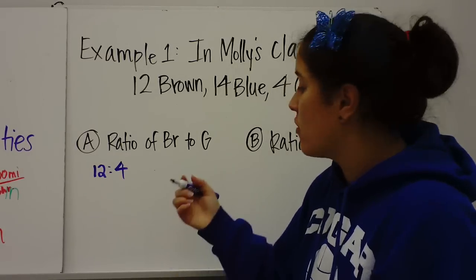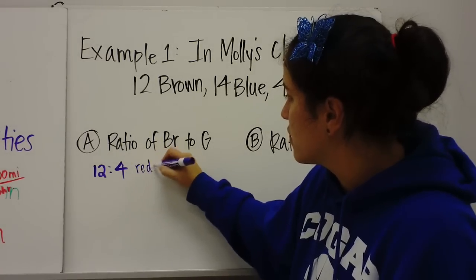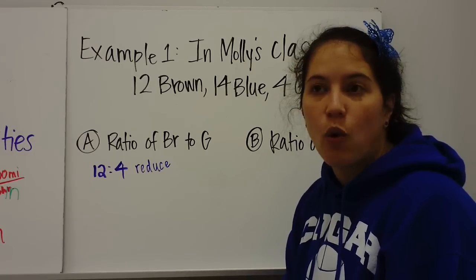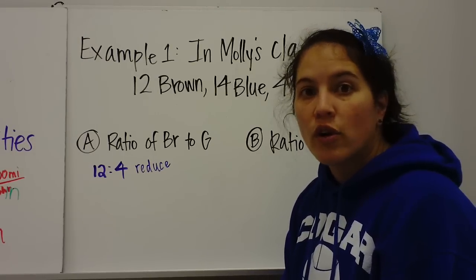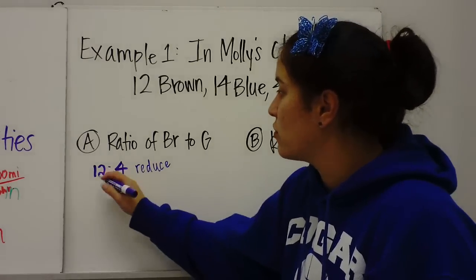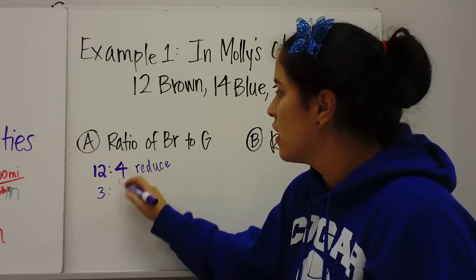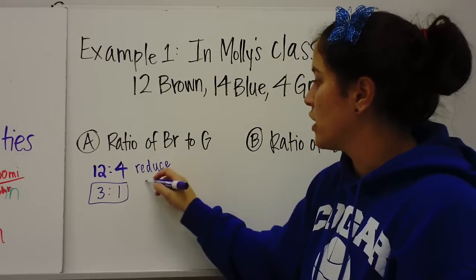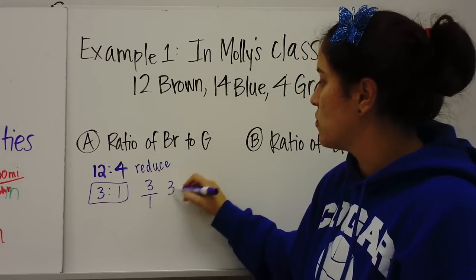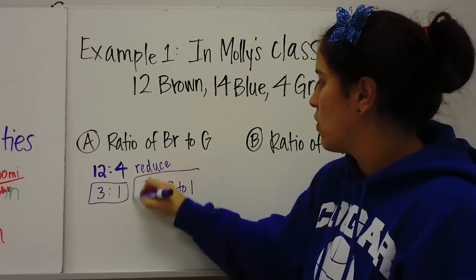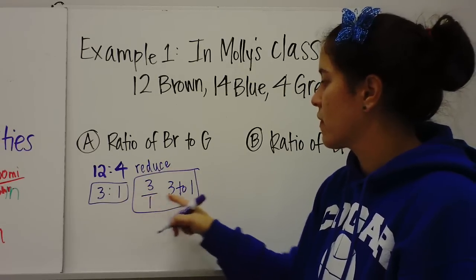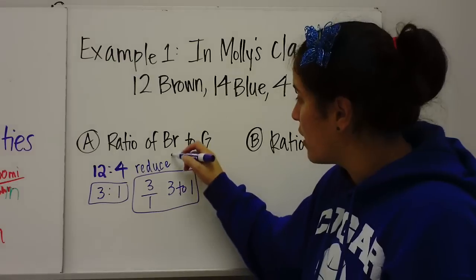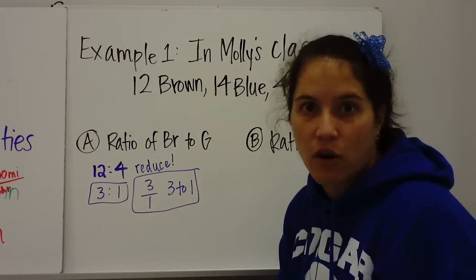The other thing you need to do with ratio is we always have to reduce. So let's reduce 12 and four, and four will go to both of them. 12 divided by four is three, 4 divided by four is one. So the answer would be three brown to one green, three to one, or three to one. So those are the three ways to write a ratio. And remember, you always reduce. Always, always, always reduce.